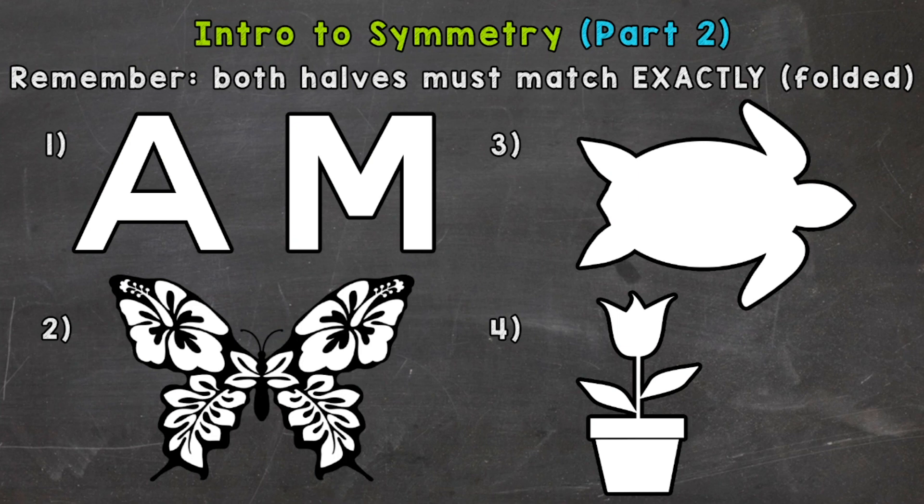If you missed part one, I dropped that link down in the description, so go check that out and then you can come back to part two. If you're ready for part two, you'll remember that we took a look at lines of symmetry within simpler shapes. Now in part two, we're going to take a look at more complex shapes and try to find lines of symmetry.